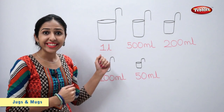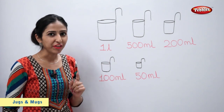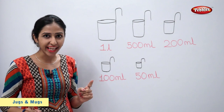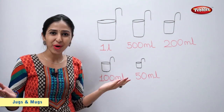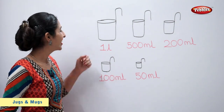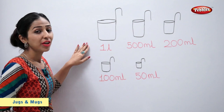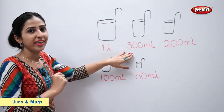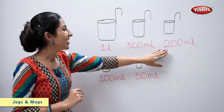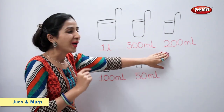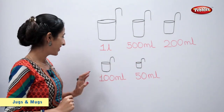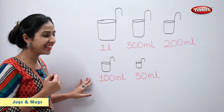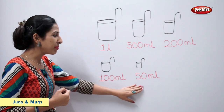These types of vessels are generally used to measure liquids like milk and oil. The capacities shown are: 1 litre, 500 ml, 200 ml, 100 ml, and 50 ml.